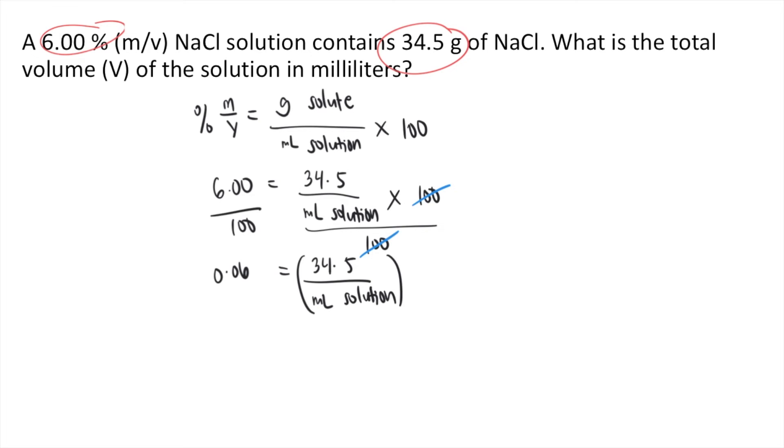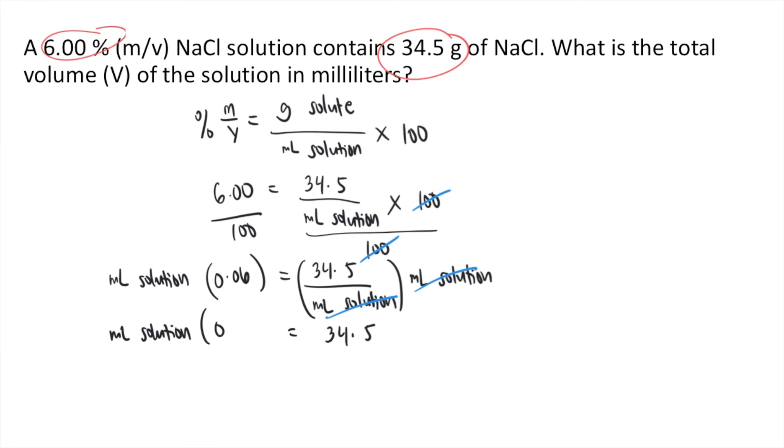Next, you're going to multiply both sides of the equation by mL of solution. So mL of solution cancels on the right side. So what remains on the right side is 34.5. On the left side, you have mL of solution times 0.06.